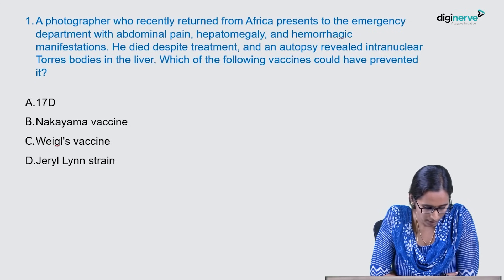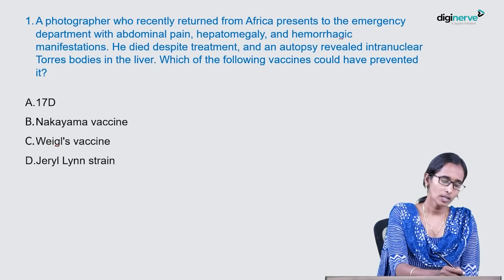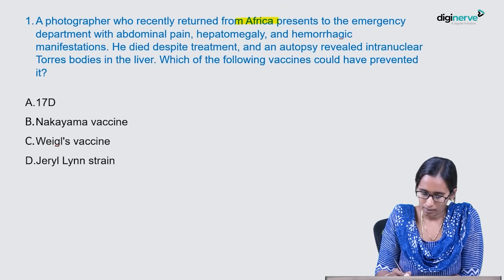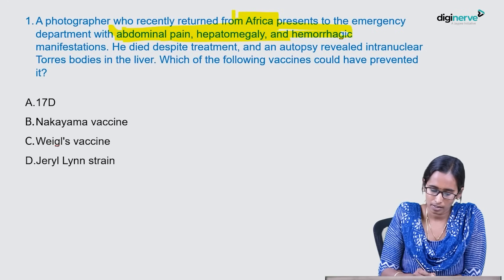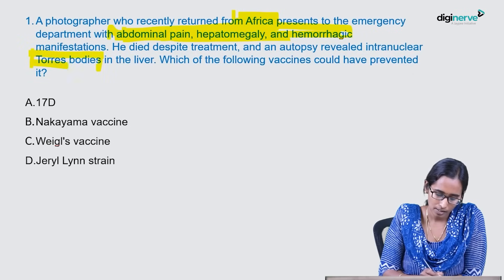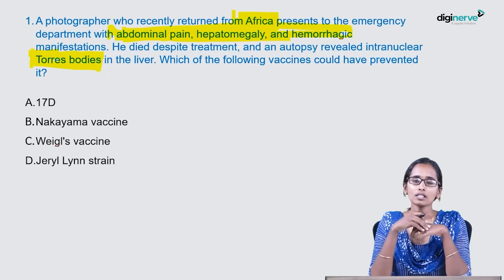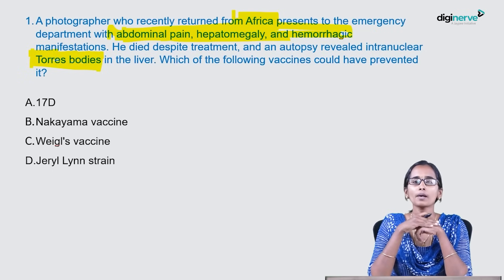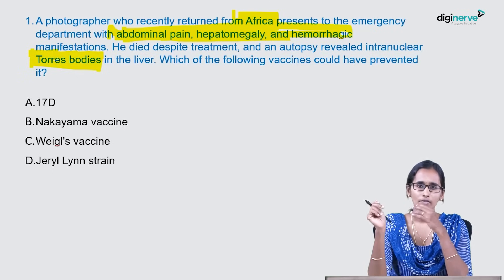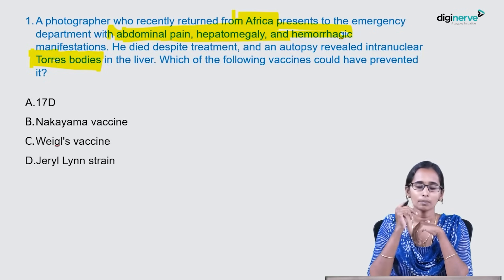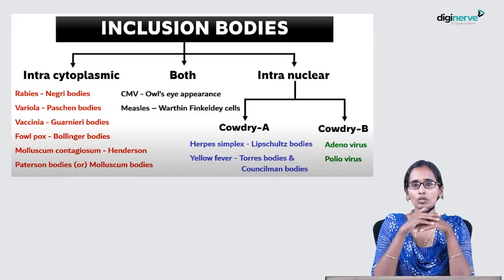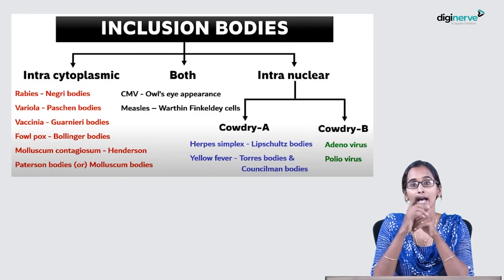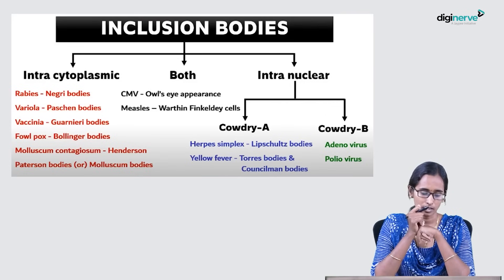The hints in this question: patient is from Africa, patient has liver manifestations — hepatomegaly, abdominal pain — and very importantly, Torres body is present. It is very necessary to know about inclusion bodies for any exam — USMLE, NEET, or FMGE. You will get a question from inclusion bodies. There are intracytoplasmic inclusion bodies, intranuclear inclusion bodies, and some that are both intracytoplasmic and intranuclear.